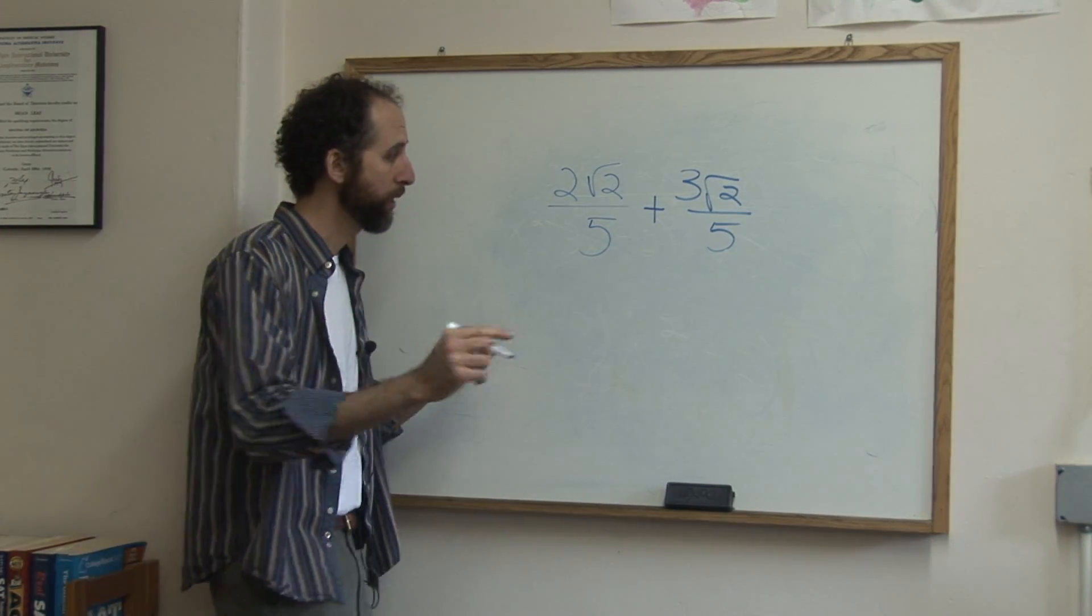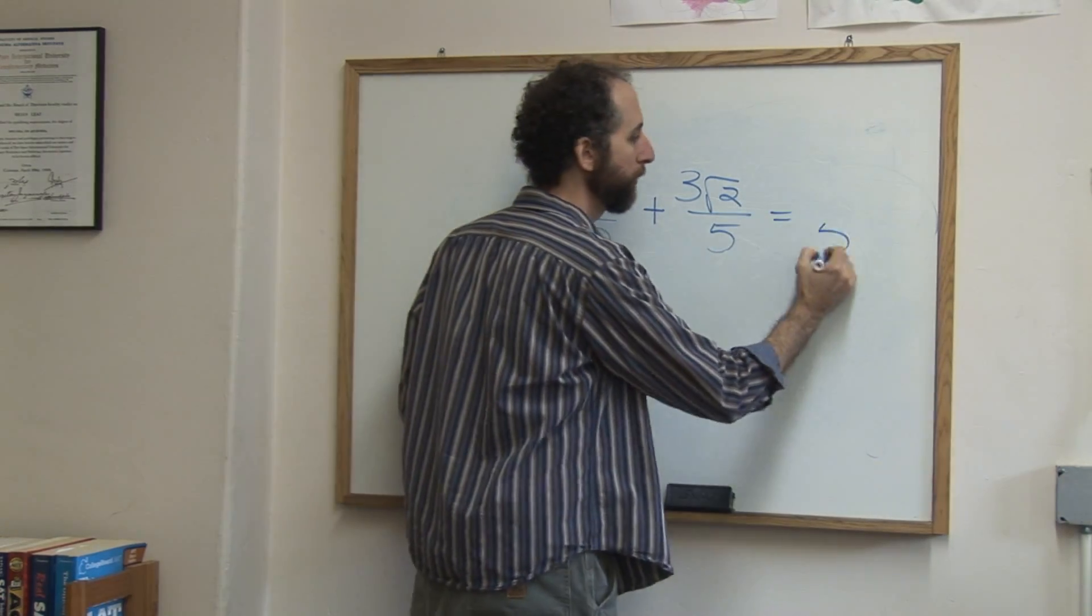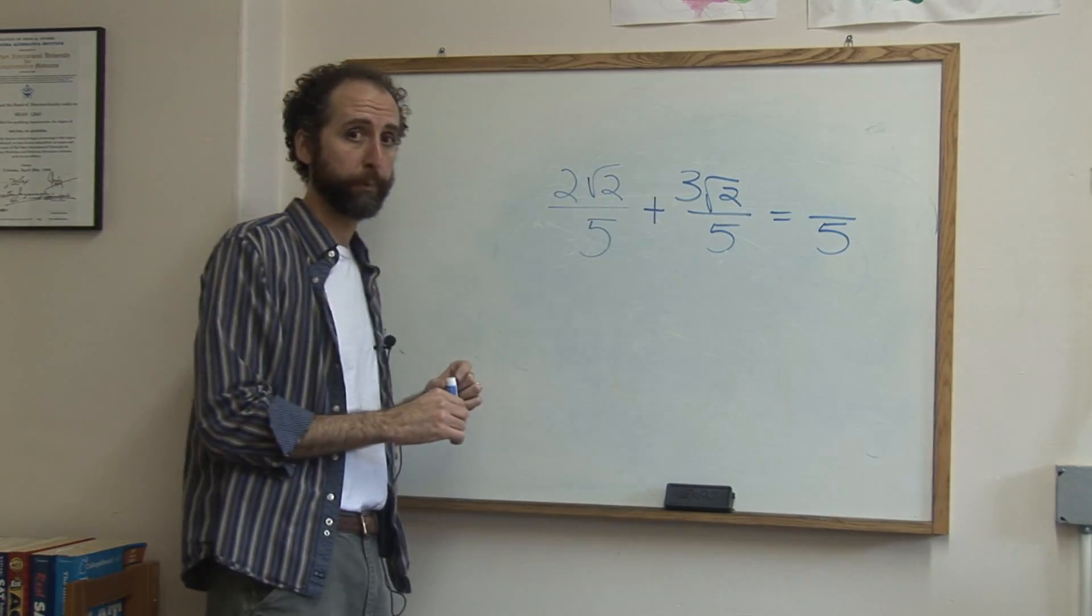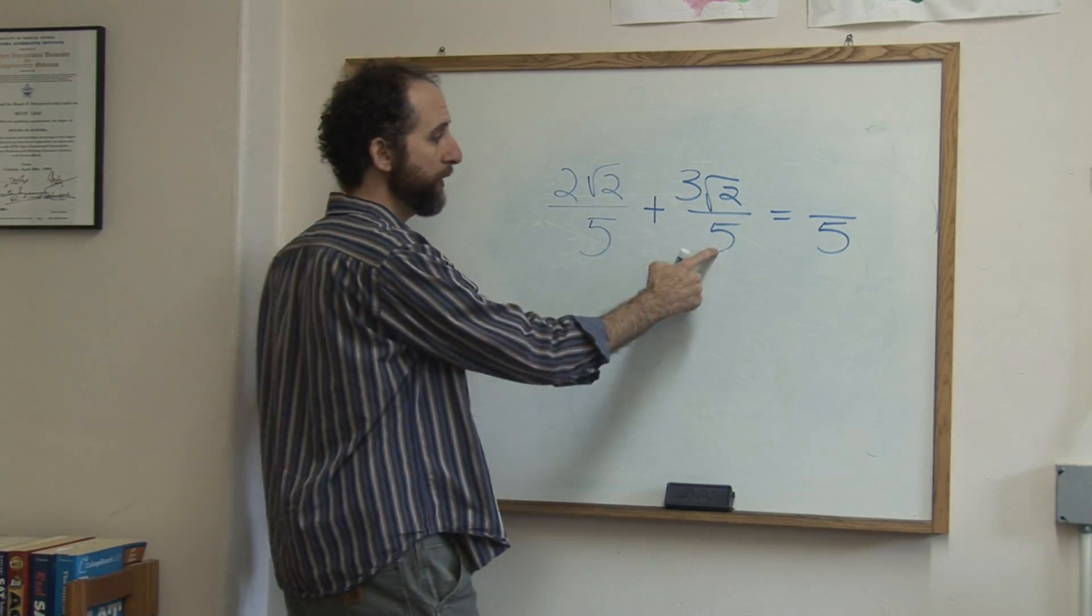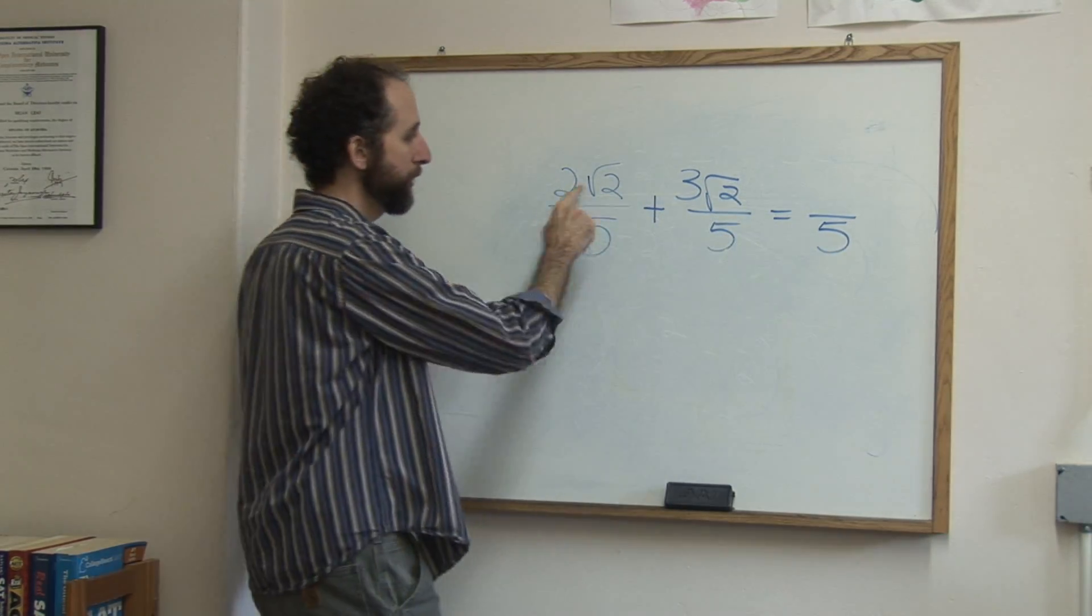So when you add fractions, you keep the denominator, so the denominator is five, but you add the tops. So the five plus five we don't add, that just carries over. The tops we add.